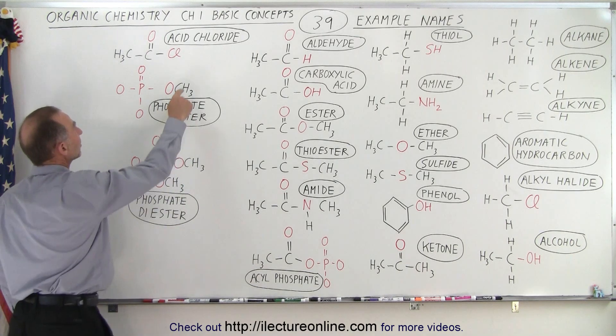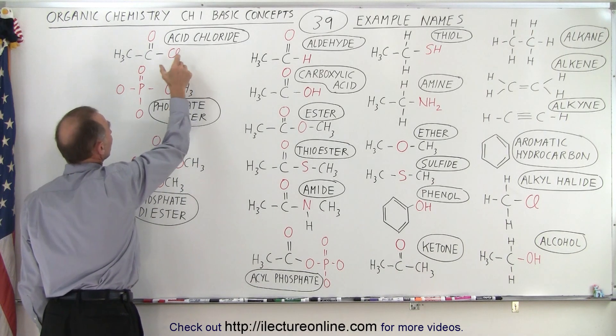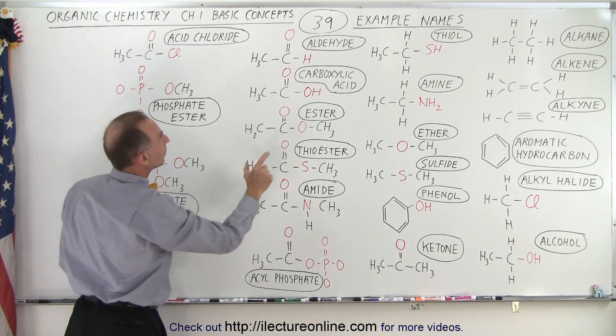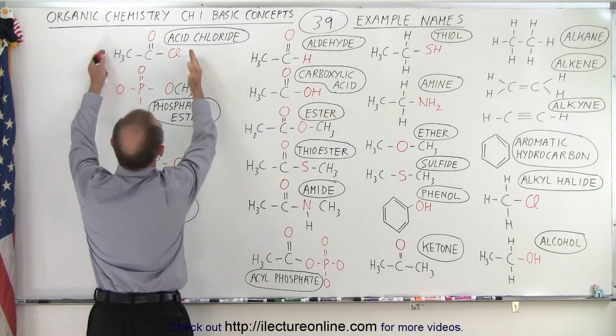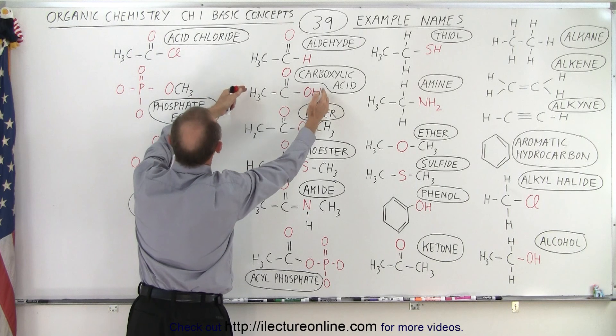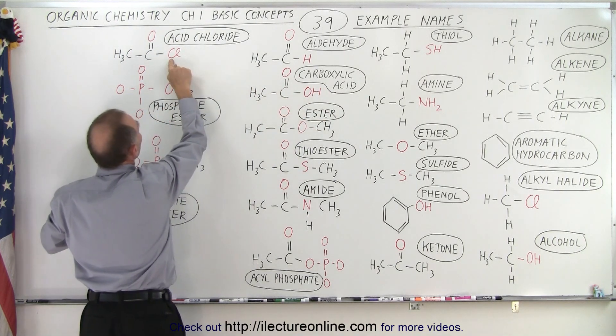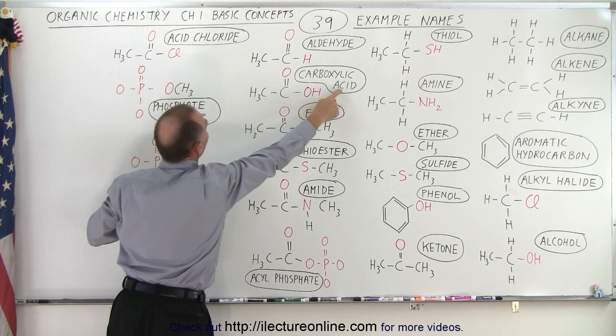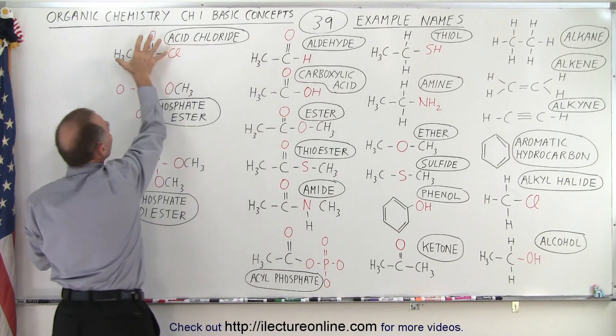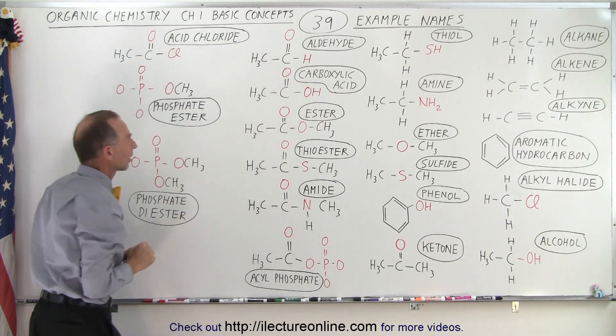Here we have the acid chloride. Notice that this, let's go back to the acid chain right here. So notice this looks exactly like this, but instead of having an OH at the end we have a chlorine. So this becomes acid chloride to give the name for that molecule that looks just like that one.